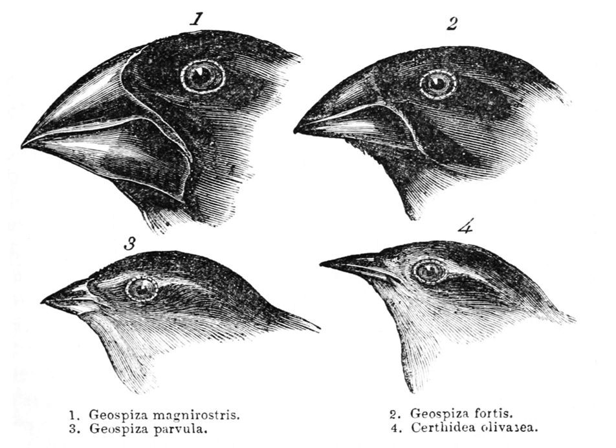Phytogeography is the branch of biogeography that studies the distribution of plants. Zoogeography is the branch that studies the distribution of animals. Knowledge of spatial variation in the numbers and types of organisms is as vital to us today as it was to our early human ancestors, as we adapt to heterogeneous but geographically predictable environments.